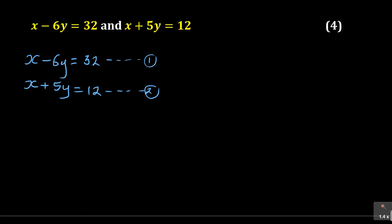I'm going to start with the first method, which I will call the elimination method. When we use the elimination method, we have to eliminate either x or y. So you study the two equations: the first is 1x minus 6y equals 32, and the second is 1x plus 5y equals 12. You can see that 1x is repeating in both equations, so I can eliminate that particular x.